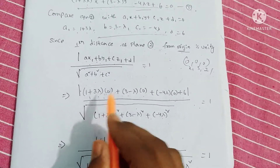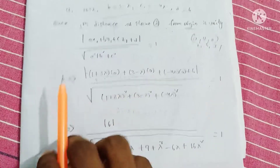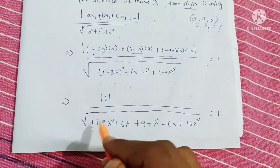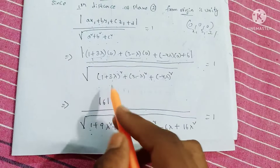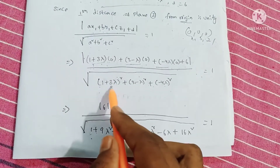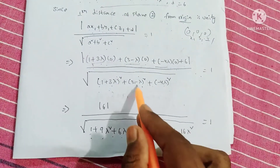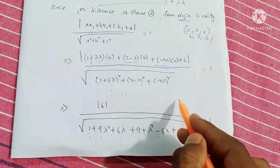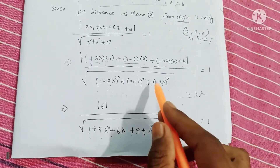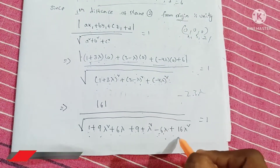Expanding (1 plus 3 lambda) whole square: 1 plus 9 lambda square plus 6 lambda. Expanding (3 minus lambda) whole square: 9 plus lambda square minus 6 lambda. The 6 lambda and minus 6 lambda cancel. Plus (minus 4 lambda) whole square gives 16 lambda square. So denominator becomes root over (1 plus 9 lambda square plus 9 plus lambda square plus 16 lambda square), which simplifies to root over (26 lambda square plus 10). Thus: 6 divided by root over (26 lambda square plus 10) equals 1.